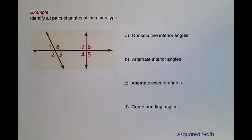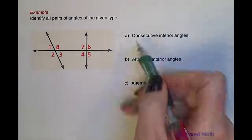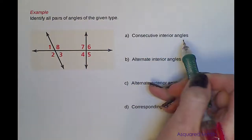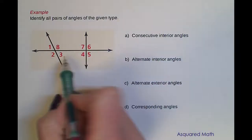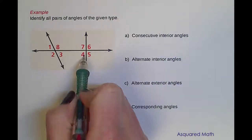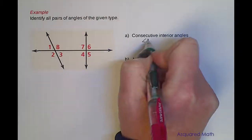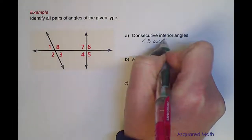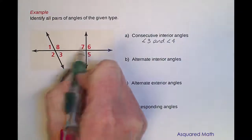Now let's identify all those angle types in this picture. Part A: consecutive interior angles are on the same side of the transversal, inside the two lines. So we're looking at angles 3 and 4, as well as angles 7 and 8.